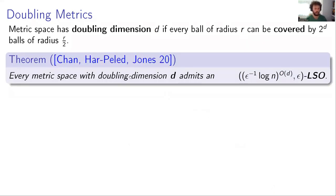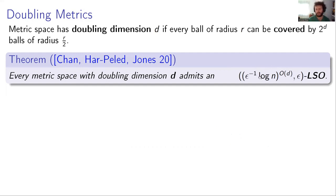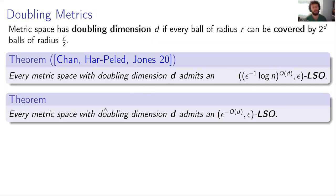Chan, Har-Peled, and Jones, in a recent paper, showed that every metric space with doubling dimension d admits LSOs with epsilon log n to the d permutations. This is unsatisfactory because of its dependence on log n — the number of points in the metric space — which one generally wants to avoid. We showed this is not necessary: every metric space of doubling dimension d admits an epsilon-to-the-minus-d, epsilon LSO.